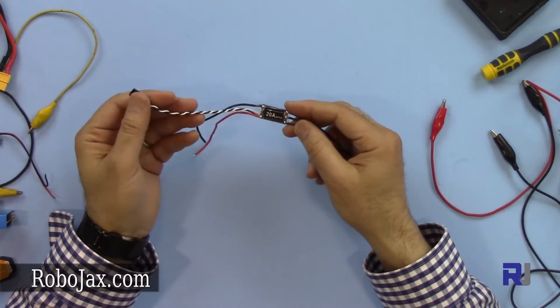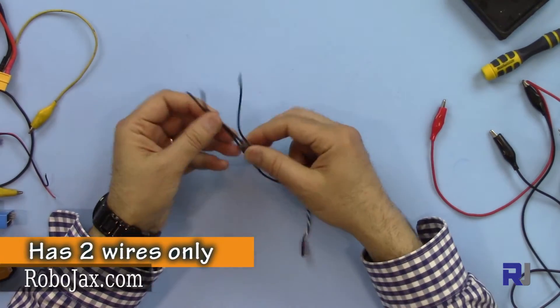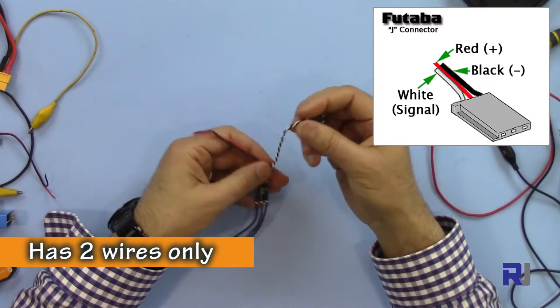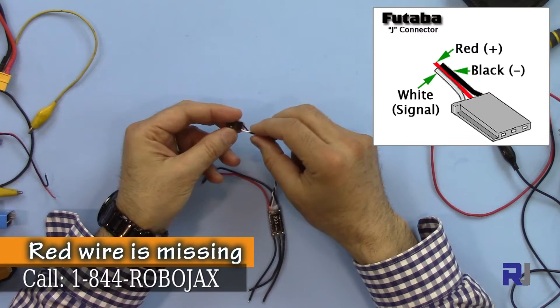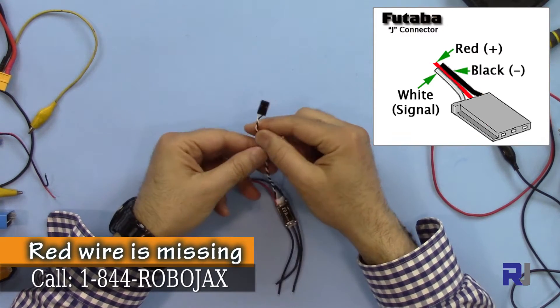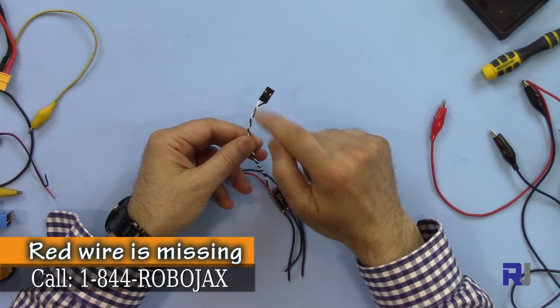As you can see here, once you connect it, the servo connector doesn't have the red wire, so it doesn't output the 5 volts. It just inputs the signal through the white cable.